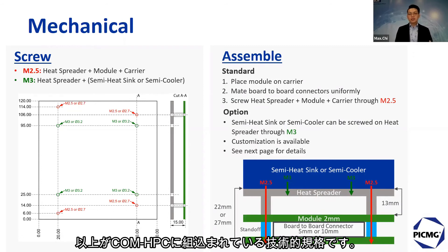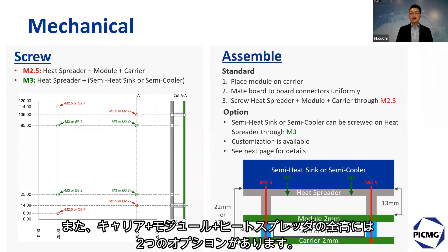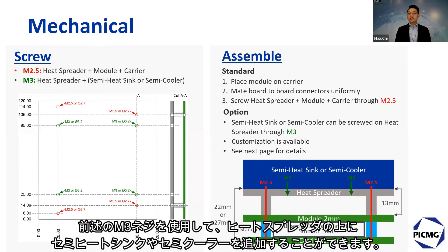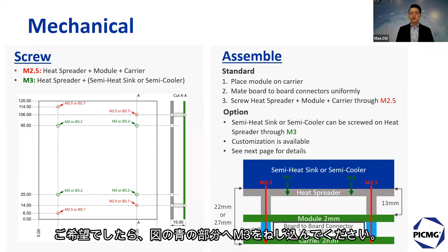That is the standard thermal solution ComHPC defines. The total height of heat spreader plus module plus carrier has two options: if you go for a 5mm high portable connector, the total height will be 22mm; if you go for a 10mm portable connector, the total height will be 27mm. Module vendors can provide a semi-heatsink or semi-cooler to be attached on top of the heat spreader, secured with M3 screws.